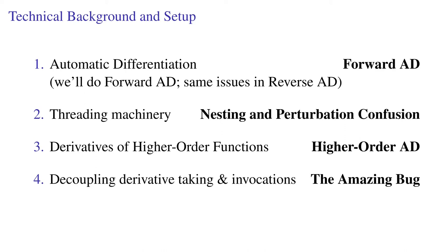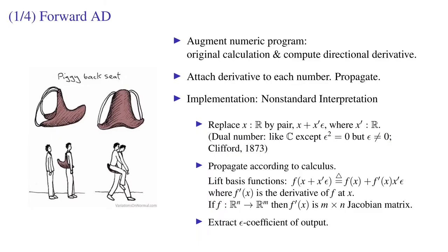Then, I'll talk about classic perturbation confusion and how it's avoided using tags. We'll think about derivatives of higher order functions and see how allowing them breaks the one-to-one correspondence between invoking derivative operators and taking derivatives, thus allowing this bug. After that's all unpacked, we'll look at ways to address the problem.